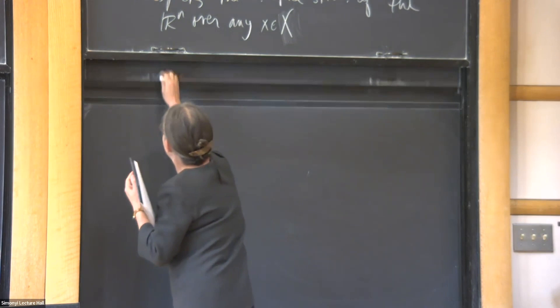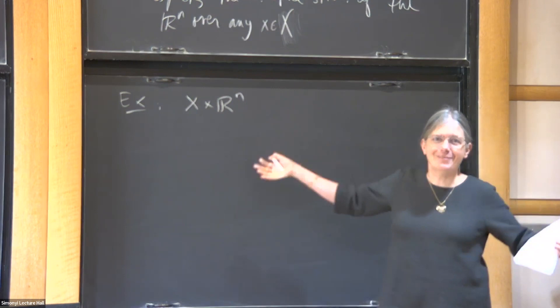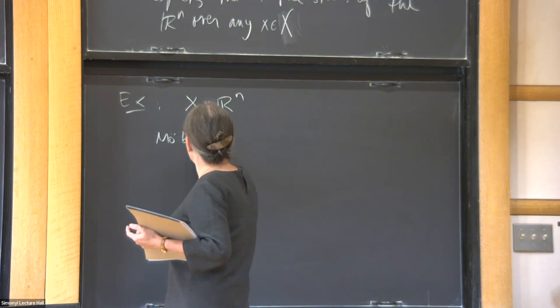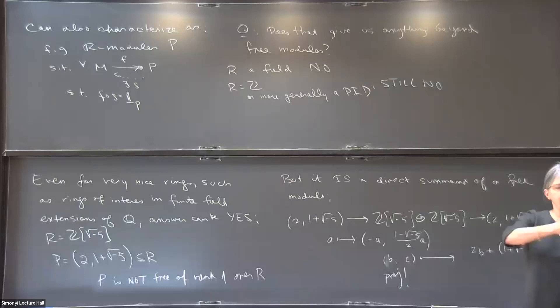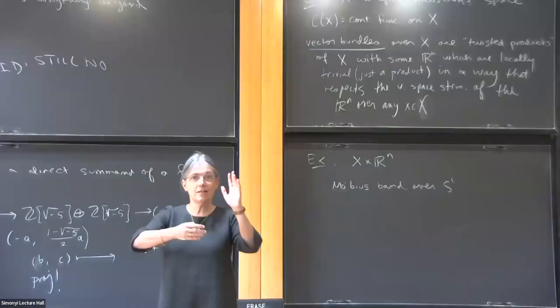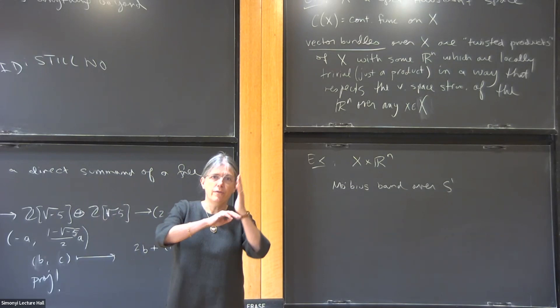For examples: if I have a product X × R^n, that's a trivial vector bundle — over each point you have a vector space, it's a product globally. But you can also look at the Möbius band over S¹. I can regard the Möbius band as taking a circle and putting a copy of R over each point with a twist. Over each interval it looks like a product, and I can glue the intervals when I come back with a twist in a way that preserves the vector space structure of the line.